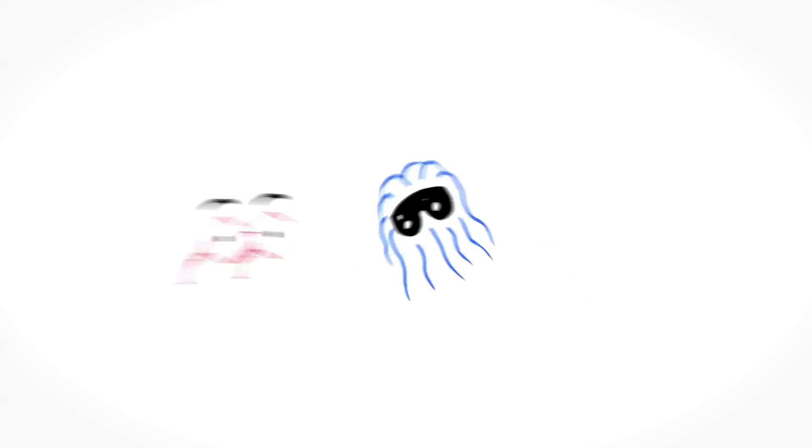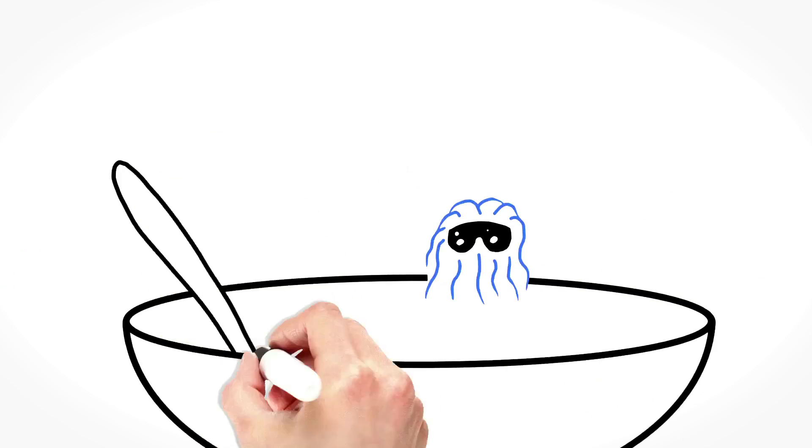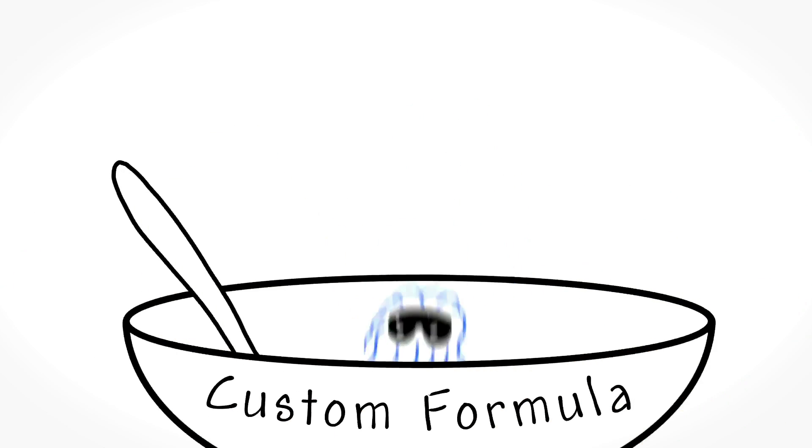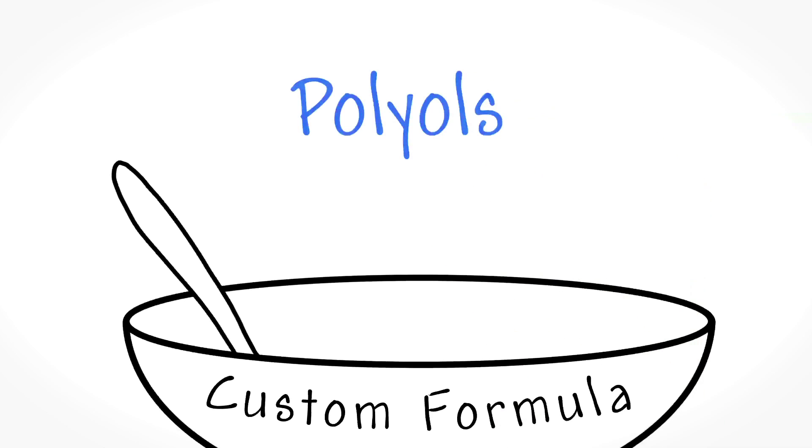Now, when BASF makes a resin, we create a custom formula of additives that include polyols. They're the backbone of the mix. Polyols make up the majority of the mix, kind of like flour is to a cake batter. Polyols determine the physical properties of the product, like how soft or hard the product is.